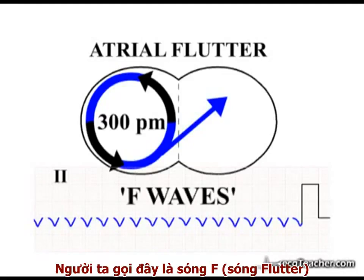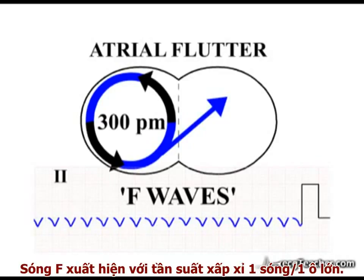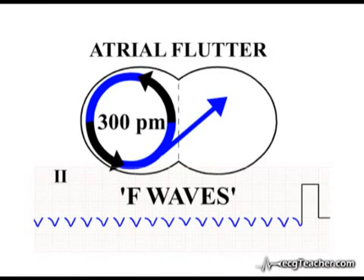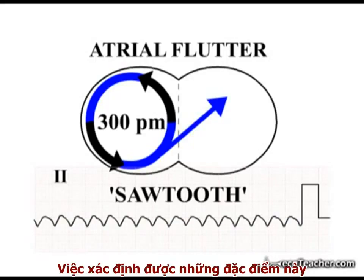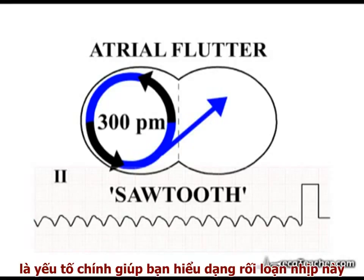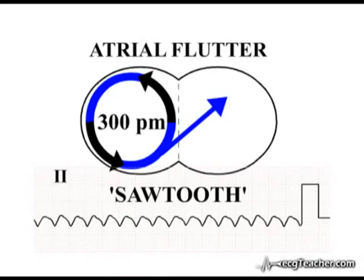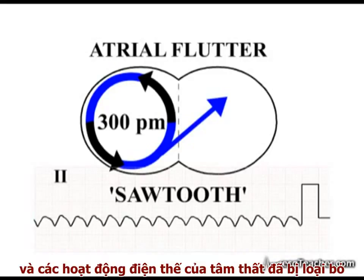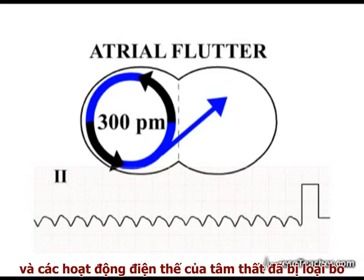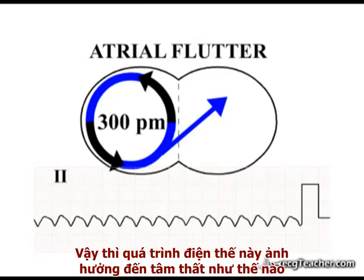At a rate of 300 discharges per minute, the flutter waves are of course present at intervals of approximately 1 per large square. This is the saw-tooth pattern characteristic of atrial flutter. Identification of elements of this underlying pattern is the key to the diagnosis of this arrhythmia, but it is not always easy. Remember we are looking here at a particularly striking example and with ventricular activity removed. So what effect does this process have on the ventricles?